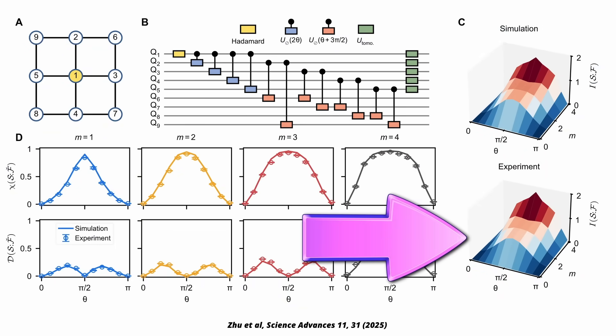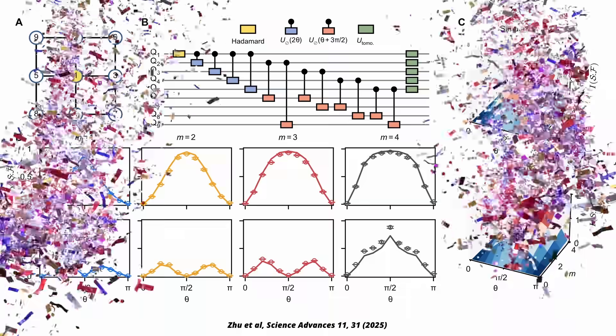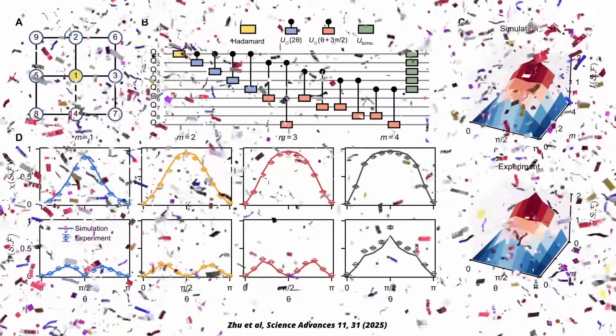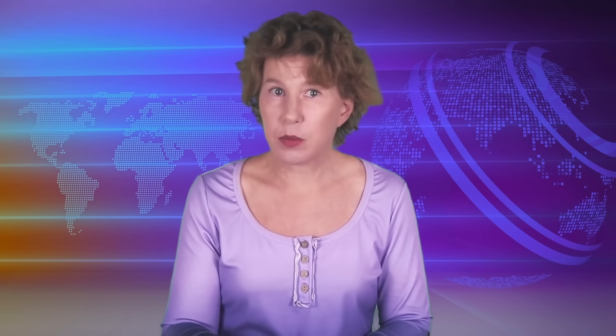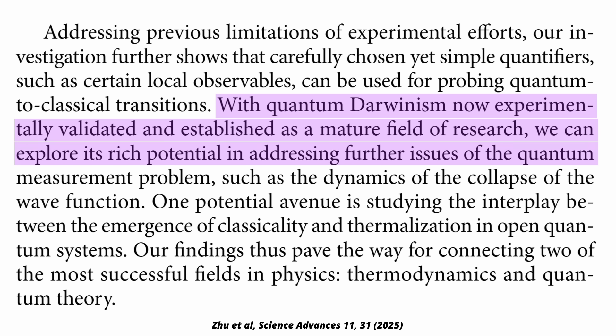The mutual information between the two system qubits and the small environment quickly rose and then plateaued. So this means that the basic idea is correct. Then they outline the next steps. With quantum Darwinism now experimentally validated and established as a mature field of research, we can explore its rich potential in addressing further issues of the quantum measurement problem, such as the dynamics of the collapse of the wave function.